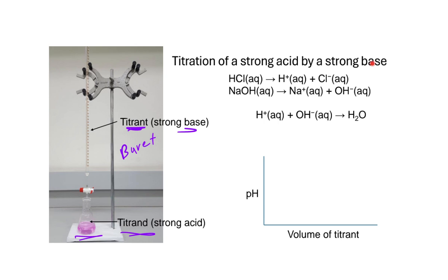We add small portions of titrant to the titrand and allow reactions to take place. For the reaction of a strong acid with a strong base — say hydrochloric acid and sodium hydroxide — when these are in solution they completely dissociate. We have H+ and Cl- from the acid, and Na+ and OH- from the base. The reaction that really happens is H+ plus OH- forming water.